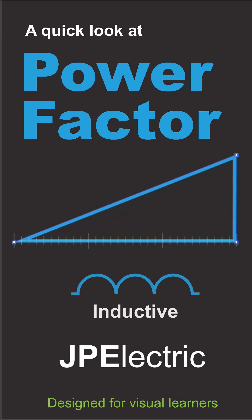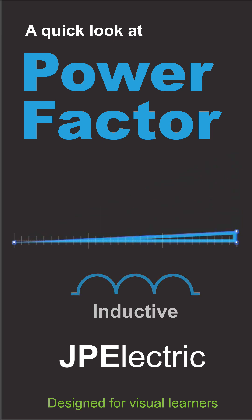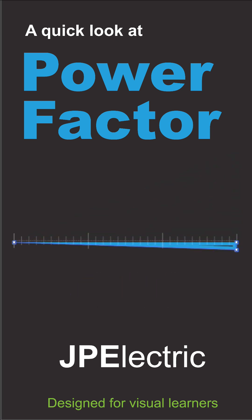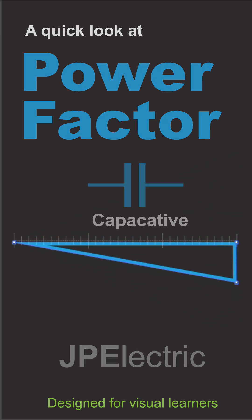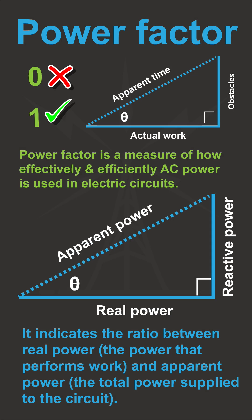Power factor is a measure of how effectively and efficiently AC power is used in electric circuits. It's often depicted with this triangle here.